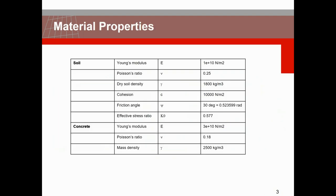In terms of material property we will keep the model linear and we will consider two materials, one for the soil and one for the concrete. The properties are listed in the table and we will start with a complete model using soil property, and during the stage construction we will place the culvert and use the concrete property.